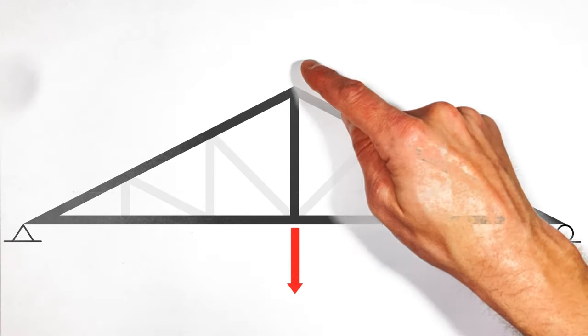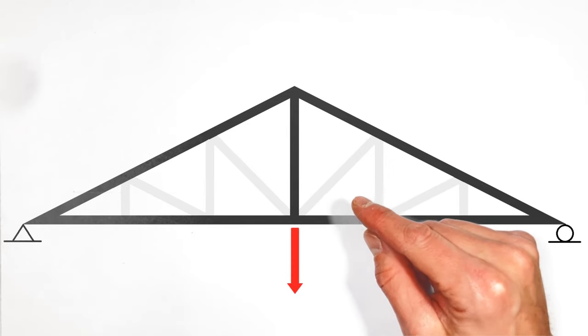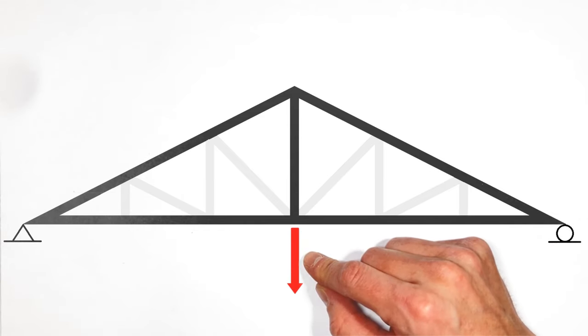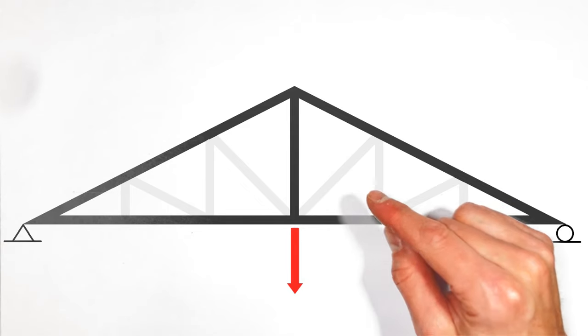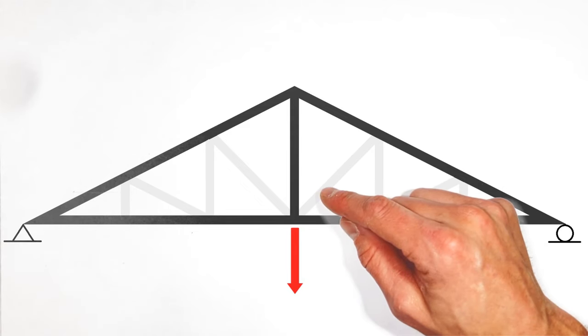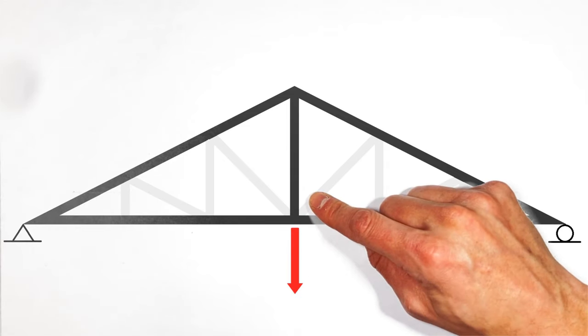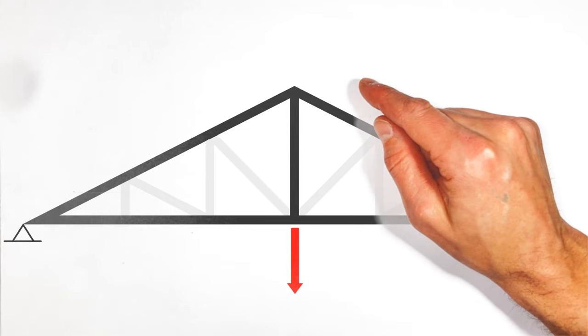Now, you might be tempted to think that this member right here in the middle has no force in it, but if an external force, like a support, or in this case a load, acts on what otherwise would have been a zero-load member, then we probably don't have a zero-load member. In this case, the load is pulling down on this joint right here, which means this center beam has to be pulling up, meaning it's not a zero-load member.